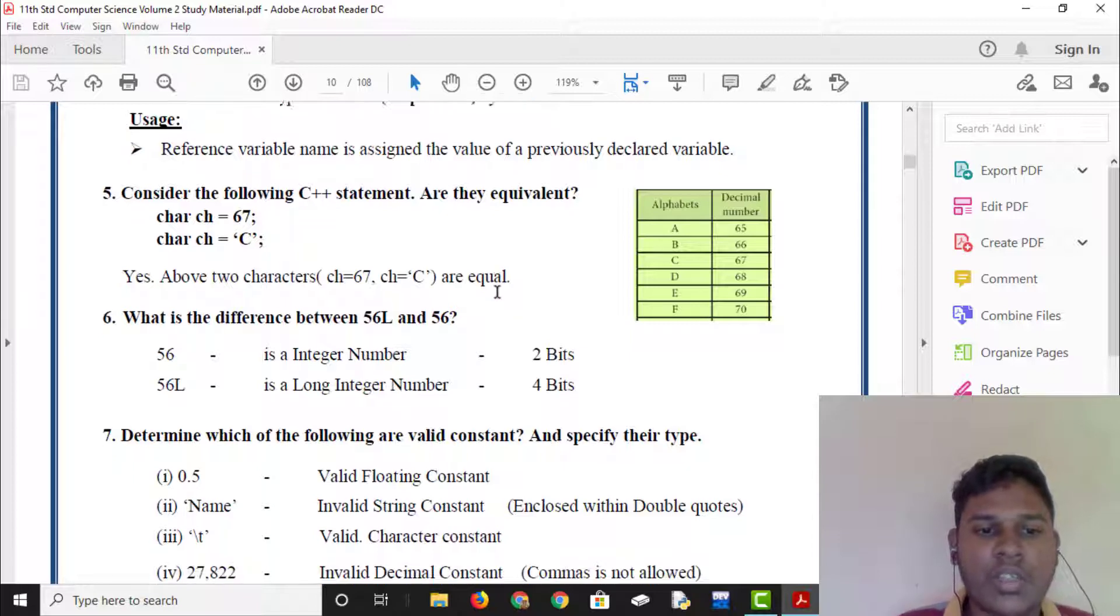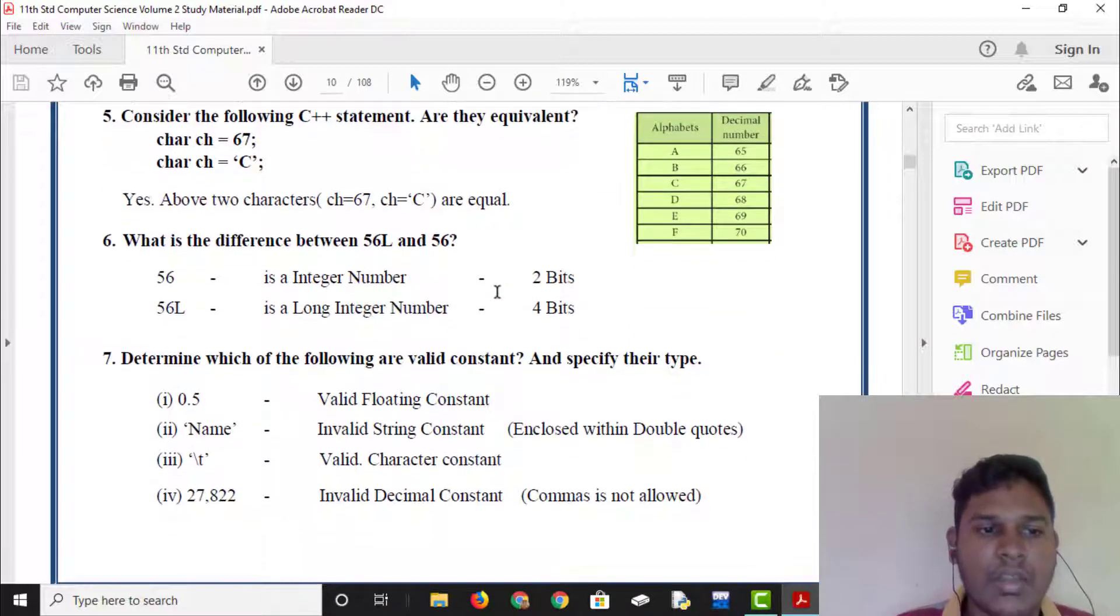What is the difference between 56L and 56? 56 is an integer number, that is 2 bytes. 56L is a long integer number, that is 4 bytes. This is Turbo C++. This is Dev C++. Integer number is 4 bits. Long integer number is 8 bits.